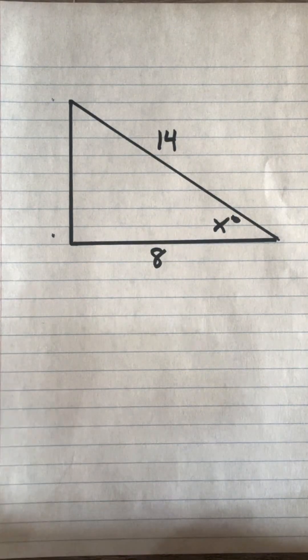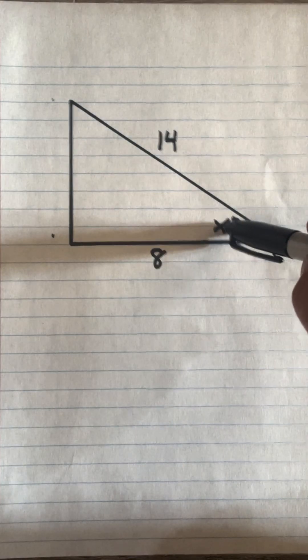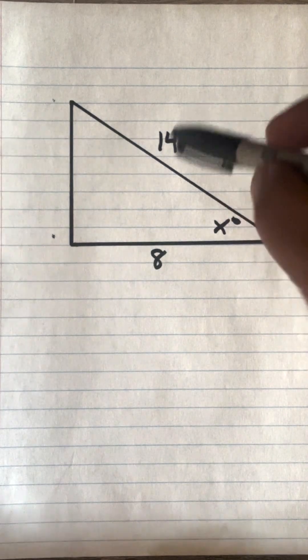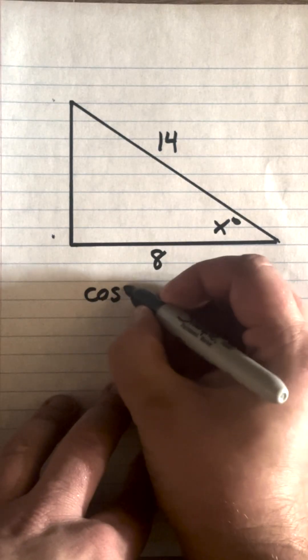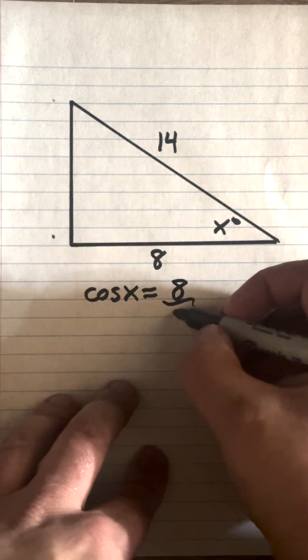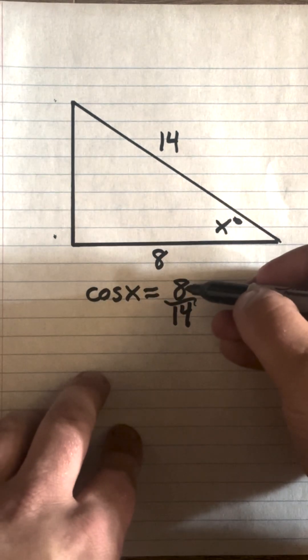All right, let's solve for the angle x. So we have x needs to be solved. We have adjacent and hypotenuse, which gives us cosine. So this will be cosine x equals opposite over hypotenuse. So let's do that division.